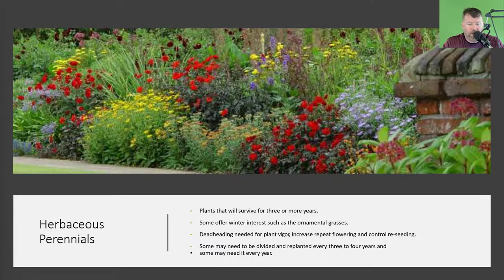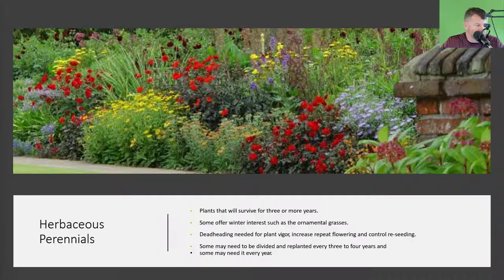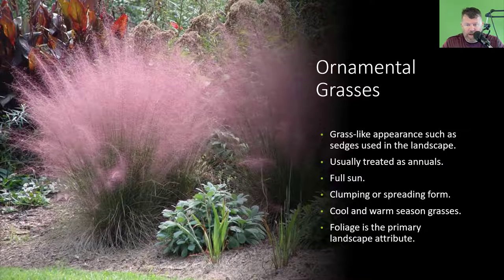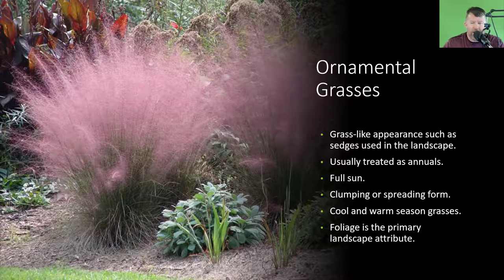With herbaceous perennials — plants that survive three or more years — some offer winter interest such as ornamental grasses. Deadhead them for plant vigor, increased repeat flowering, and to control reseeding. Some may need to be divided and replanted every three to four years, some every year, depending on the perennial. Ornamental grasses have a grass-like appearance such as sedges. They prefer full sun, come in clumping and spreading forms, and we have both cool and warm season grasses. Foliage is the primary attribute in the landscape.